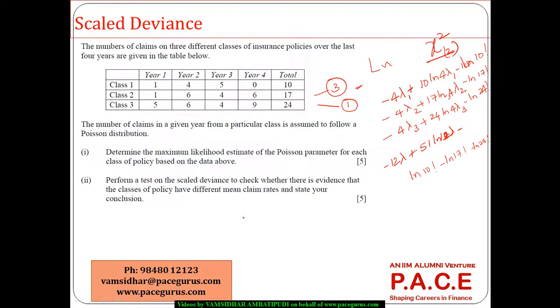Now I can take the subtraction of these two, which is the log likelihood with respect to separate, which is more saturated, and log likelihood with respect to our model. So I can very well take the difference between these two to show whether there is any kind of difference that is bringing out by separating them out. Now these are going to be cancelled out in that exercise, so which is resulting in minus 4 lambda 1 plus 10 log 4 lambda 1 minus 4 lambda 2 plus 17 log 4 lambda 2 minus 4 lambda 3 plus 24 log 4 lambda 3 minus 12 lambda plus 51 log 12 lambda, this entire thing.